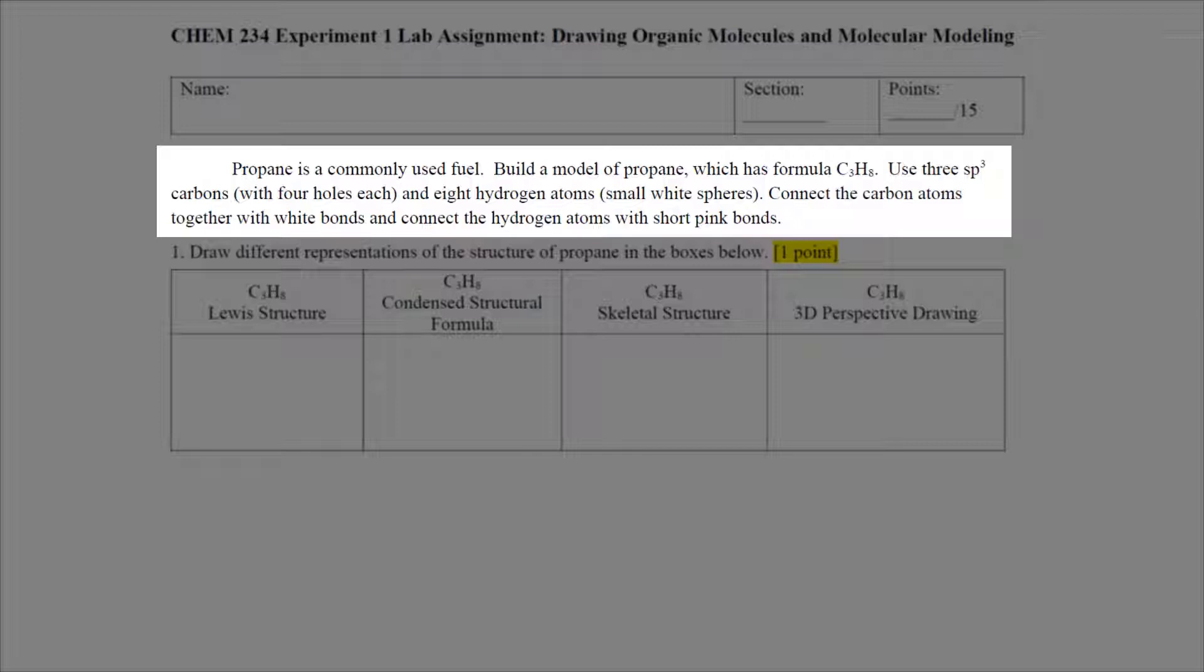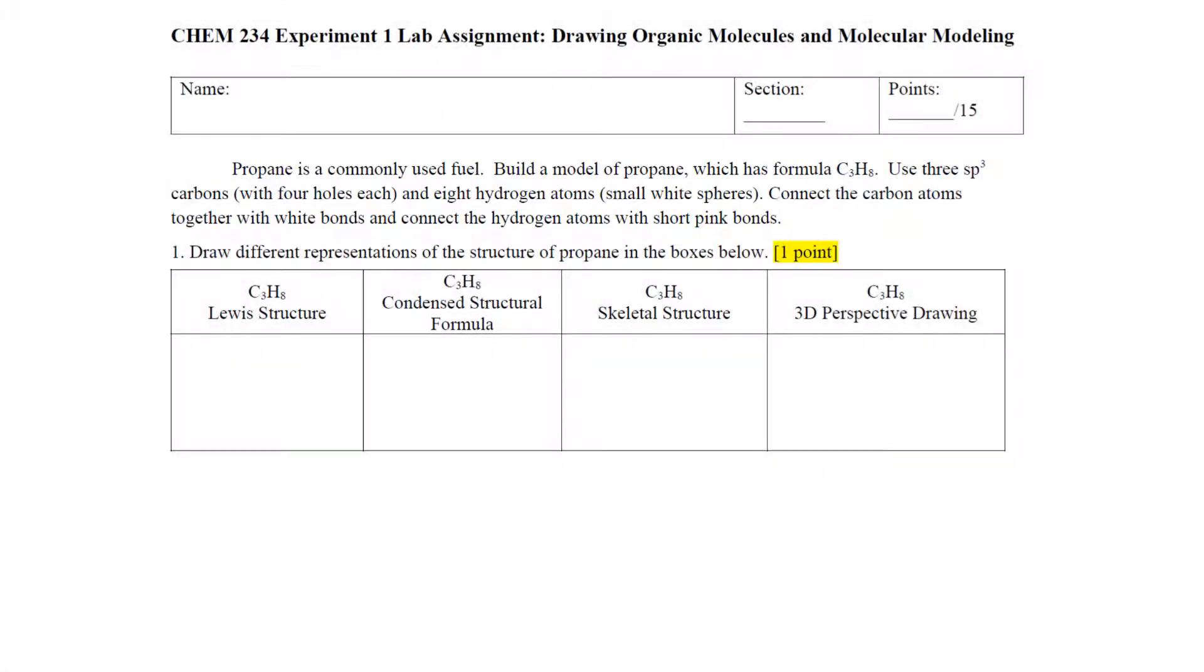Use 3 sp3 hybridized carbons. These are the carbons, the black spheres that have 4 holes each, and 8 hydrogen atoms. These are small white spheres. Connect the carbon atoms together with the white bonds and connect the hydrogen atoms with the short pink bonds in your model kit. I am not going to go through and do propane for you, but I will do the molecule ethanol, which is similar enough that you'll get the idea and be able to do propane yourself.